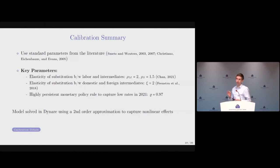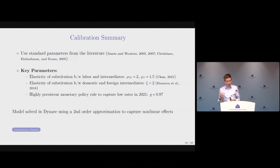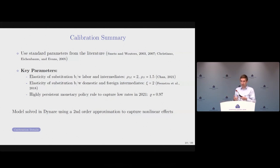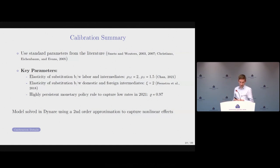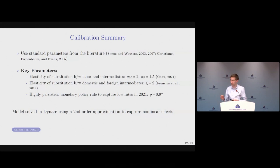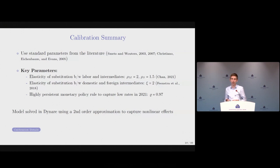Three key parameters: the elasticity of substitution between labor and intermediates, set to 2 in the goods sector and 1.5 in services based on work by Chun using disaggregated Danish data. We also explore a Leontief production function, and find surprisingly similar results. The elasticity of substitution between domestic and foreign intermediates is set to 2, based on work by Feenstra, who estimated this in the range of 1 to 4. Finally, we assume a very persistent monetary policy rule with persistence parameter 0.97 in the Taylor rule to match the Fed's initial non-response. The model is solved in Dynare using a second-order approximation.